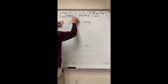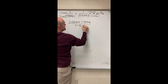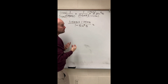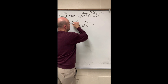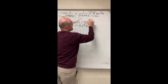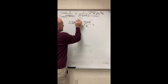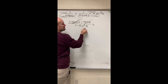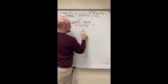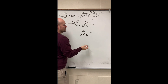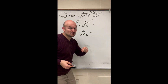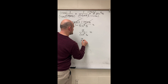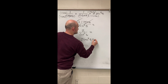I can distribute using the difference of two squares to give me 1 minus sine squared of theta in the denominator. Combining like terms in the numerator: negative sine of theta plus sine of theta goes to zero, and one plus one is two. I recognize this Pythagorean relationship as cosine squared of theta. So two over cosine squared is going to be two secant squared of theta.